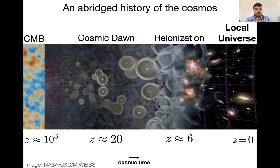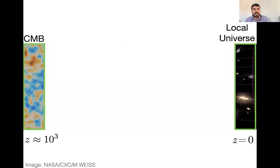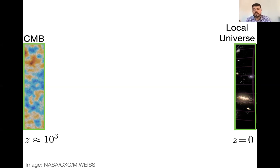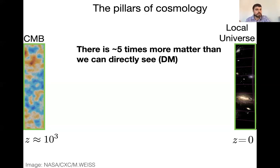From all this, what we really understand is the beginning and the end. We understand the CMB because we have a lot of data collected over decades and good theoretical models. A lot of the cosmology we know comes from the CMB. We understand the local universe because it's close to us, so we have a lot of different things we can observe and test. These two sides are the pillars of modern day cosmology.